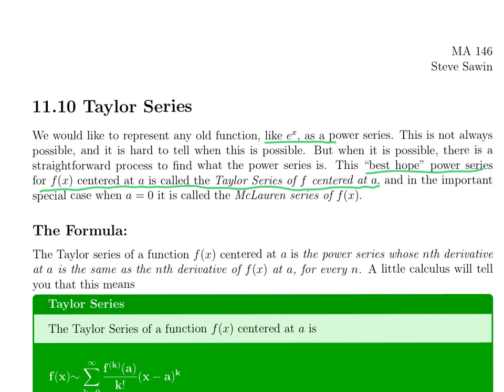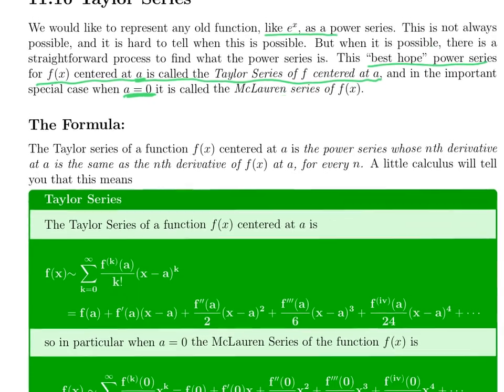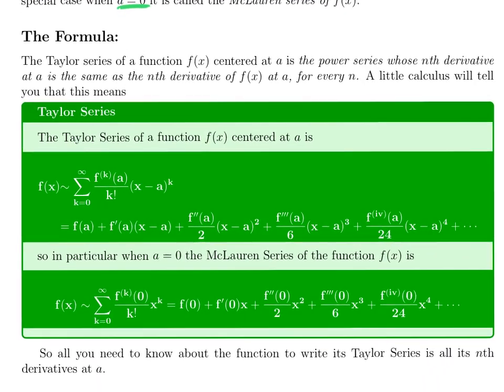Most of the time we'll focus on the special case where a is 0. A Taylor series centered at 0 we call a McLaurin series. It's exactly the same. It's just McLaurin wanted to get his name on something.